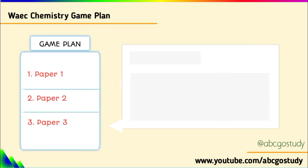In this WAEC Chemistry, it should be divided into Paper 1, Paper 2, and Paper 3. For the advantage of those who are private candidate students — if you want to know more about the difference between private candidate and school candidate, you can check the top right corner of this video. Private candidates would be required to take Paper 3 instead of Paper 1.